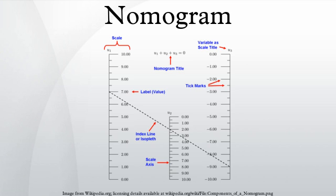A nomogram for a three-variable equation typically has three scales, although there exist nomograms in which two or even all three scales are common. Here two scales represent known values and the third is the scale where the result is read off. The simplest such equation is u1 plus u2 plus u3 equals zero for the three variables u1, u2, and u3. More complicated equations can sometimes be expressed as the sum of functions of the three variables. For example, the nomogram at the top of this article could be constructed as a parallel scale nomogram because it can be expressed as such a sum after taking logarithms of both sides of the equation.